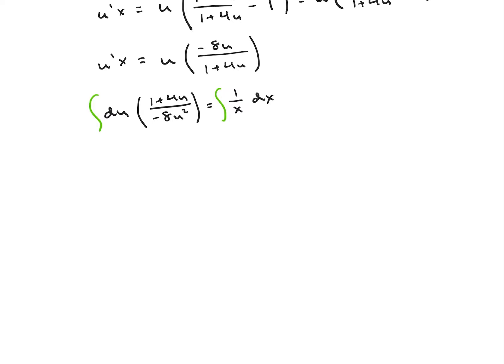And now I'm going to see that I can solve all of these different portions. So on the left, I'm going to get the integral of negative 1 eighth times 1 over u squared du plus the integral of negative 4 over 8 times 1 over u du. That's going to be equal to the integral of 1 over x dx. So all three of these are solvable.